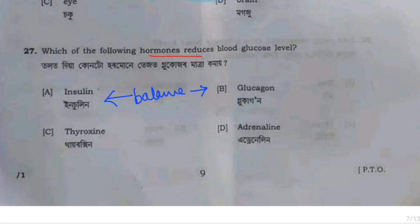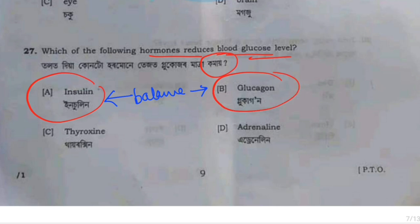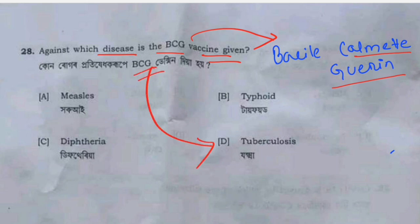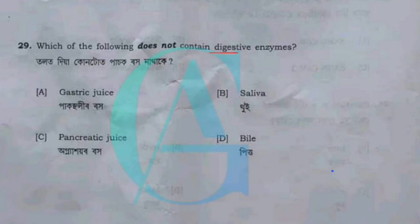Which of the following hormones reduces blood glucose level? Blood glucose level is reduced by insulin. Insulin reduces glucose levels — click insulin for the correct answer. Against which disease is the BCG vaccine used? This is the BCG vaccine.